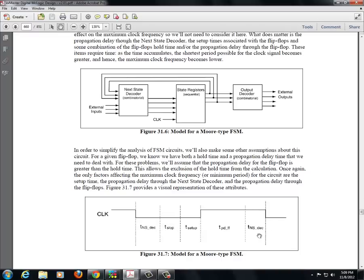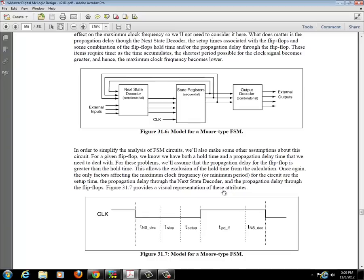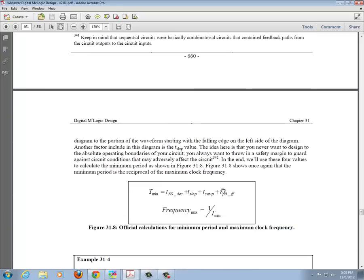This next state is put here in case we were considering looking at a falling edge. But we can ignore that for right now. So basically we look at the time for the next state decoder logic, the margin time, the setup time, and the propagation delay. So let's see how this looks for an example.